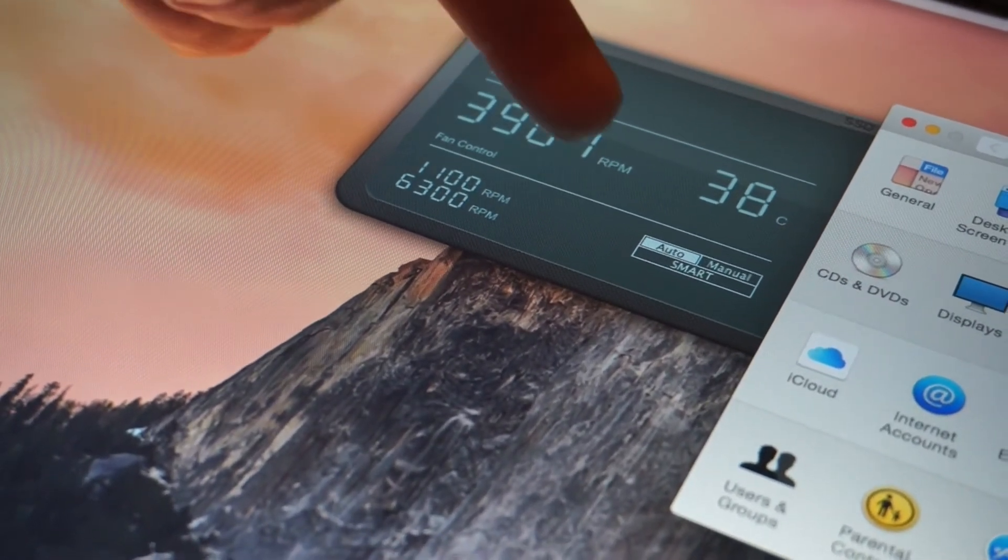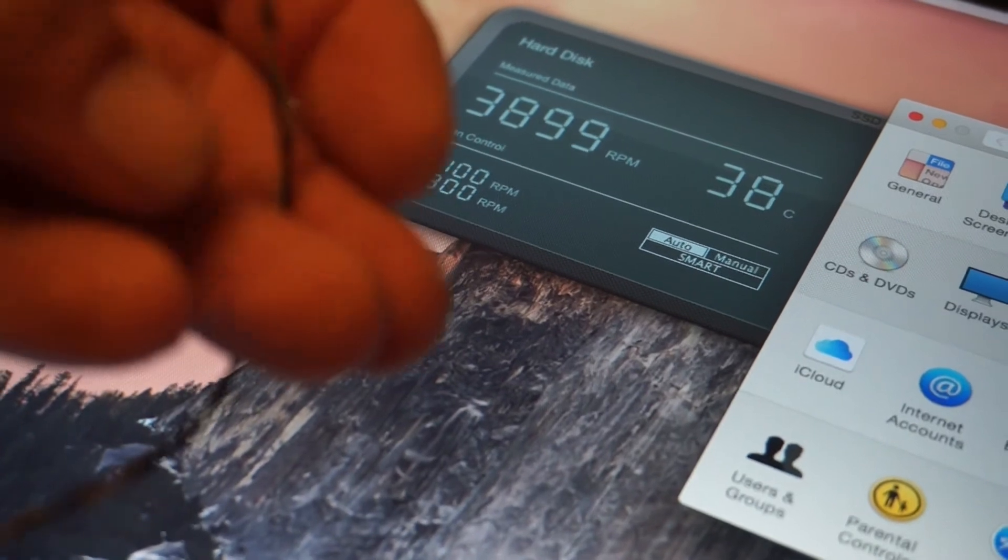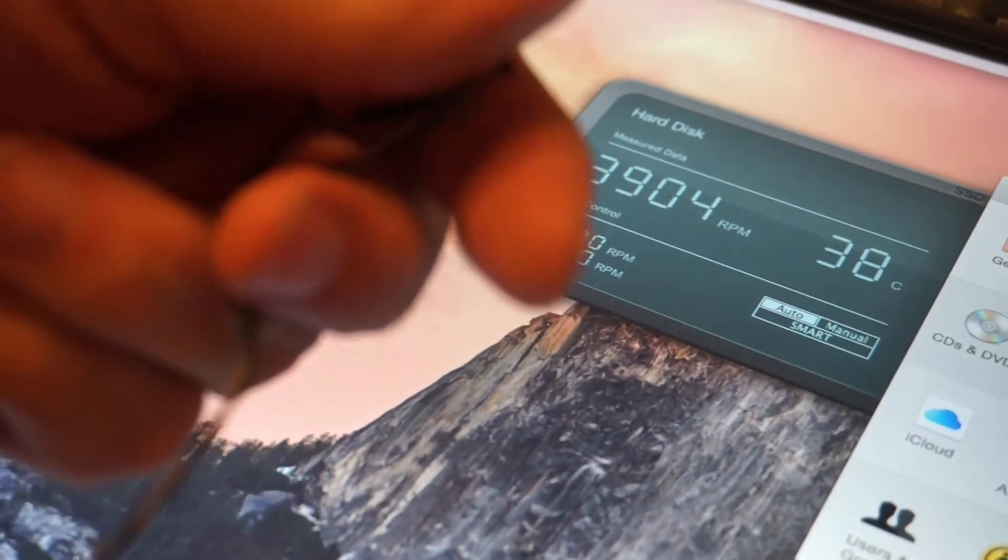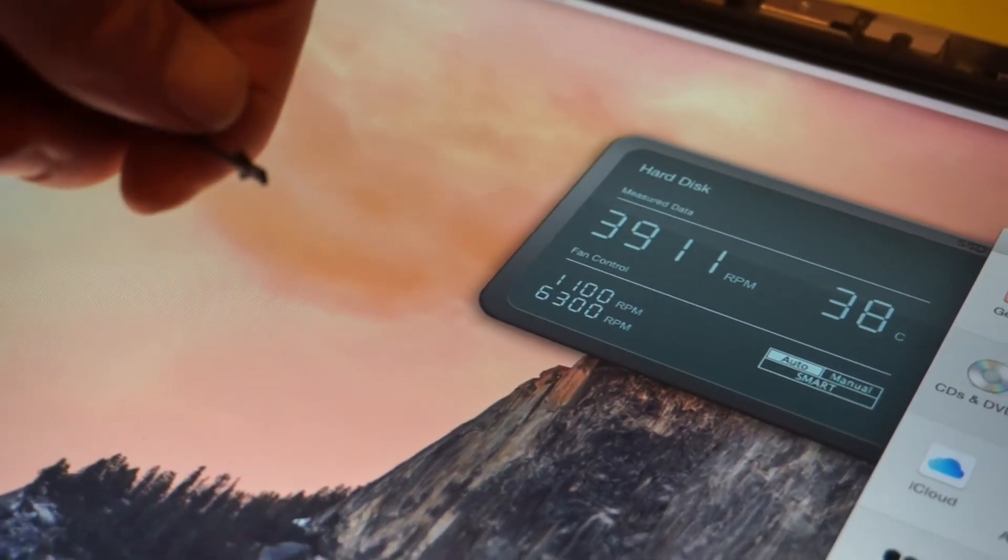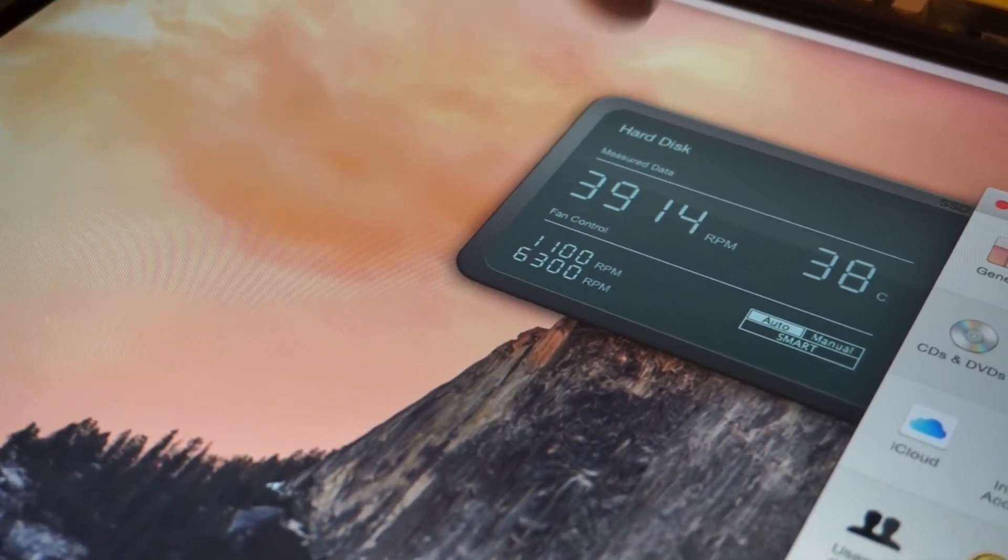So if you look at this fan speed now, it's 3900 rpm and it's going to climb up towards 6000. So we'll fit this transistor to this iMac and we'll look at the temperature and see it dropping down.